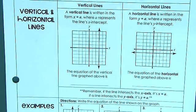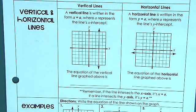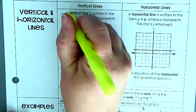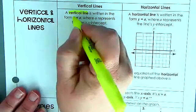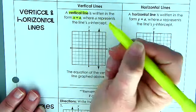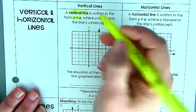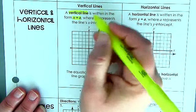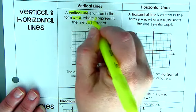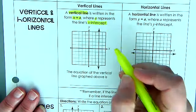For a vertical line, that means it's going up and down. The vertical line is written in the form x equals a, or x equals some number, where the a represents the line's x-intercept, where it's crossing the x-axis.